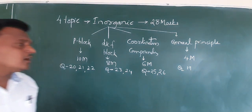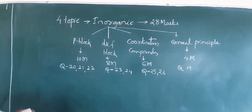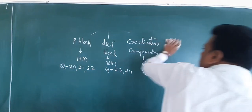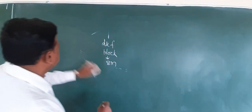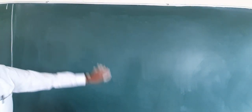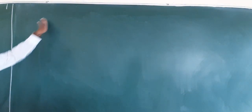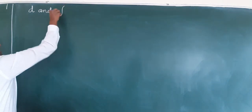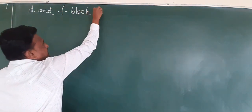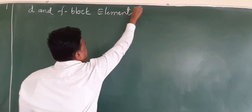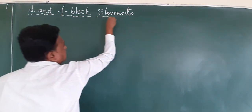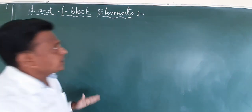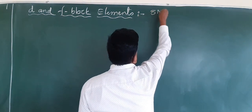In today's class we start the very important topic of our syllabus: D block elements, or commonly D and F block elements, also known as transition metals, as well as lanthanoids and actinoids. This is a very important topic to score well because the weightage of this chapter is 8 marks.